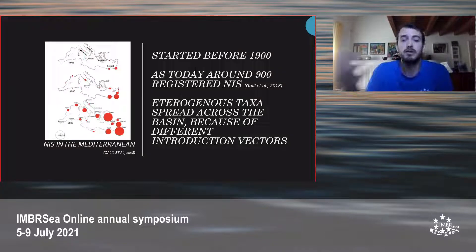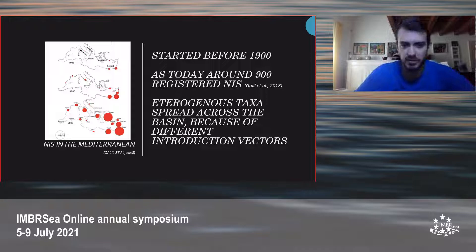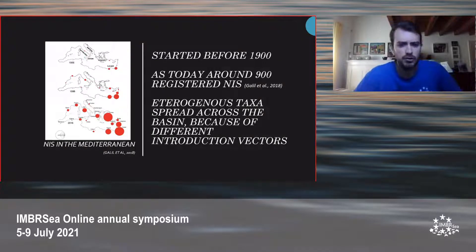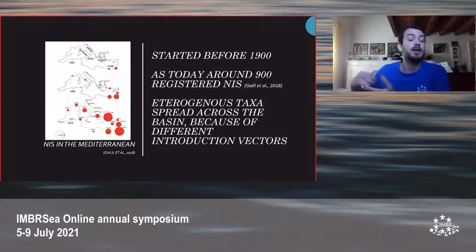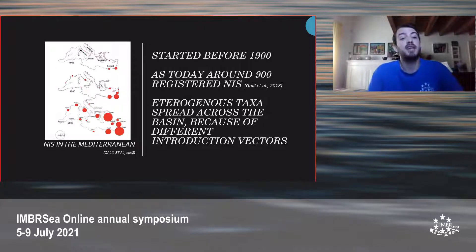When we are counting the registered NIS, it could be much more than 900 registered. There is also a heterogeneous taxa spread across the basin. In the eastern countries, such as Turkey, Lebanon, and Israel, we have more fishes and more crustaceans coming directly from the Suez Canal. And in the west, such as Spain, France, and Italy, we have species connected with boat traffic.